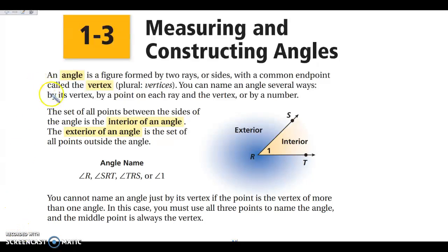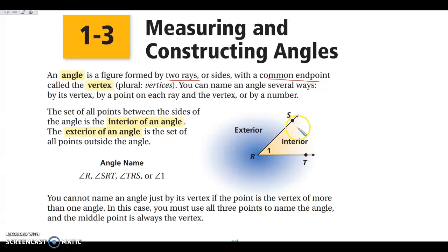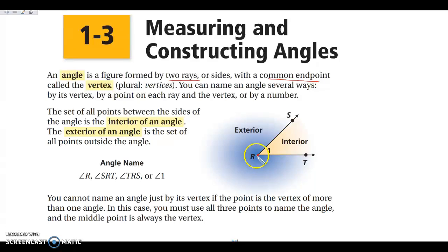What we're looking at today is angles. An angle is formed by two rays with a common endpoint. If I look at this angle here, I have ray RS and ray RT, so they share point R. R is called the vertex of your angle, so that common endpoint is the vertex.